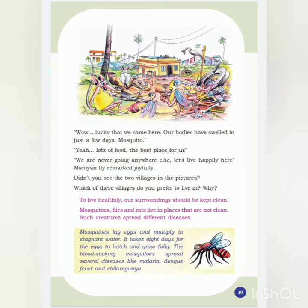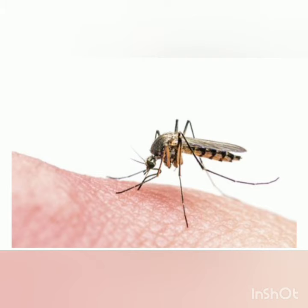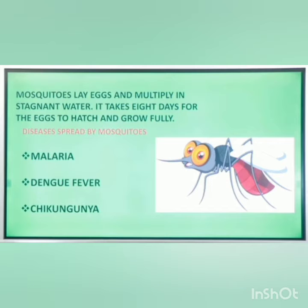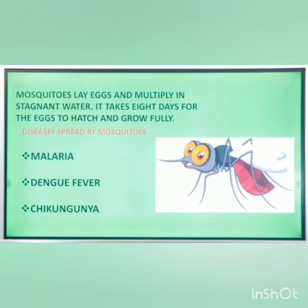Now we will check what problems these creatures cause. This is a mosquito. Mosquitoes lay eggs and multiply in stagnant water. It takes eight days for the eggs to hatch and grow fully. We know that the mosquito will suck blood from us. The blood-sucking mosquitoes spread diseases like malaria, dengue fever, and chikungunya.